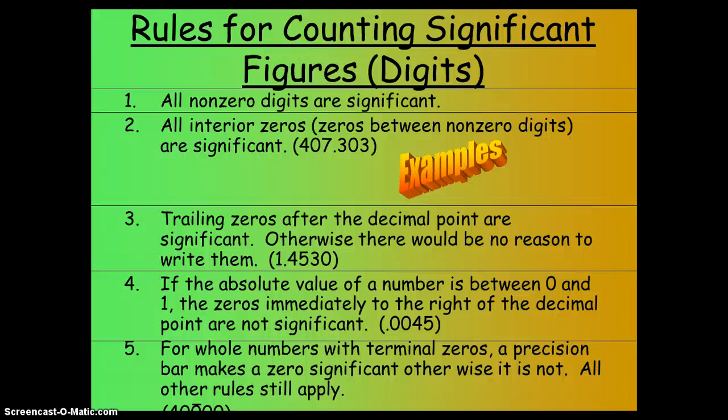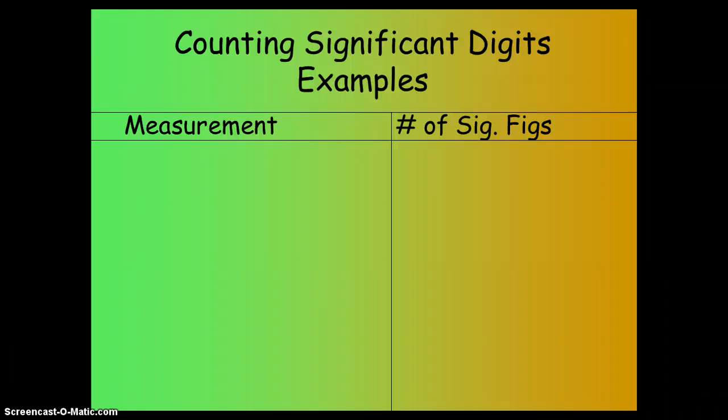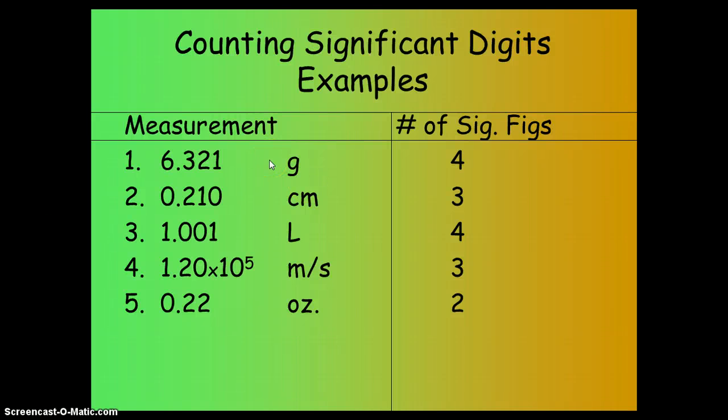Here's the rules. Any number that's not a zero, that is significant. Number two, if it's between two significant digits and it's a zero, it's significant. So those two are significant. Trailing zeros after the decimal, always significant. Otherwise, you didn't need to write them. If it's a number between zero and one and there's zeros right after the decimal like that, they don't count because if you wrote it in scientific notation, they wouldn't be there. So those don't count. Here's some examples. We're going to practice this in class, so if you want to look at these more, hit pause. Otherwise, I'm moving on.